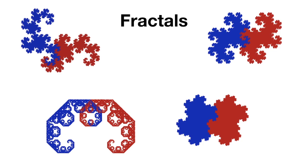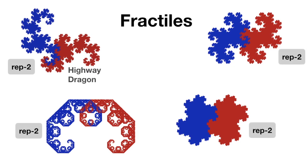Remember I said there were only two rep-2 tiles? Well, I kinda lied. If you allow fractals, should we call them fractiles? Then there are four more rep-2 tiles. The Highway Dragon. The Levi Dragon. The Twin Dragon. And the Tame Twin Dragon.